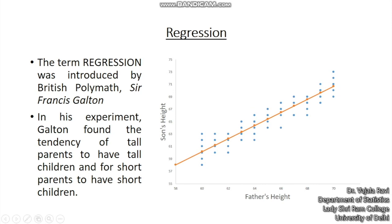Corresponding to every height there are multiple observations, and these observations somehow tend to settle down around the average value. It might happen that the taller father may have the son's height be shorter than what his expectation would be. The expectation of a tall father, let's say 70 inches tall, could be somewhere around here, but the height of the son settles down at the average value. The classical definition was that regression is stepping back towards the origin or stepping back towards the average values.